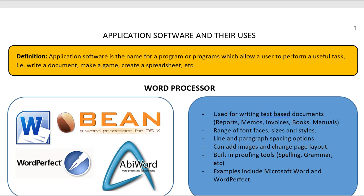As a definition, application software is the name for a program or programs which allow a user to perform a useful task. For example, write a document, make a game, create a spreadsheet, and more.